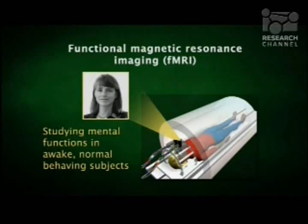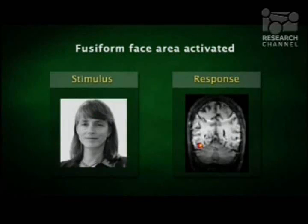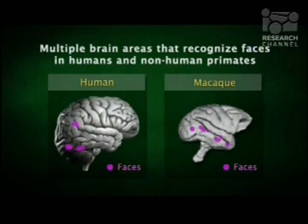Nancy Kanwisher, whose image I show here, was one of the pioneers in this area. She was the first person to define a specific area that responded selectively to faces. We now know from her work and from Marge Livingston's work that there are several areas that respond to faces and process different aspects of faces. In the monkey, you can see similar areas with imaging. If you put an electrode into any one of these areas, 95% to 97% of the cells respond to faces — they respond to nothing else, not to places or any other objects, selectively to faces.